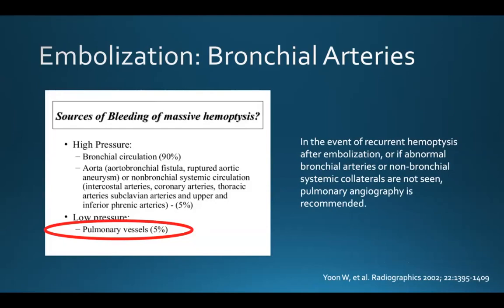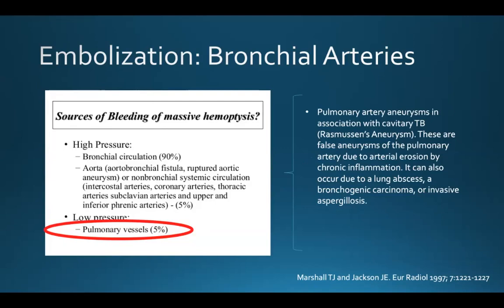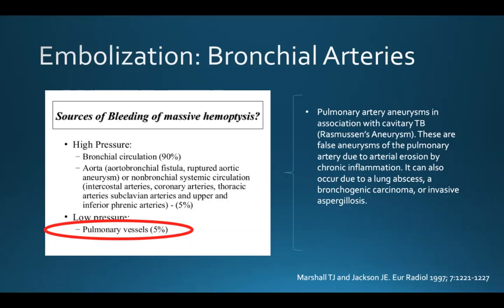In the event of recurrent hemoptysis after embolization, or if abnormal bronchial arteries or non-bronchial systemic collaterals are not seen, pulmonary angiography is recommended because causes arising from the pulmonary circulation can be responsible for hemoptysis in 5% of cases. Pulmonary artery aneurysms in association with cavitary TB — otherwise known as Rasmussen's aneurysms — can be responsible for hemoptysis in this setting. These are false aneurysms of the pulmonary artery due to arterial erosion by chronic inflammation. They can also occur due to lung abscesses, bronchogenic carcinoma, or invasive aspergillosis. Other pulmonary sources include septic emboli due to the development of pseudoaneurysms and pulmonary AVMs.